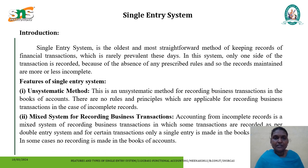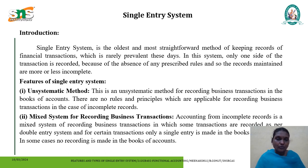Some of the features of single entry system are discussed. The first feature is the unsystematic method, also known as the unscientific method. This is an unsystematic method for recording business transactions in the books of accounts. There are no specific rules and principles followed or applicable for recording business transactions, so it is known as an incomplete record of bookkeeping.